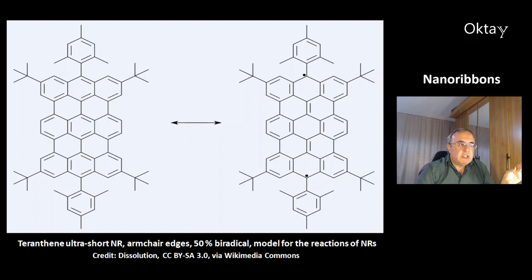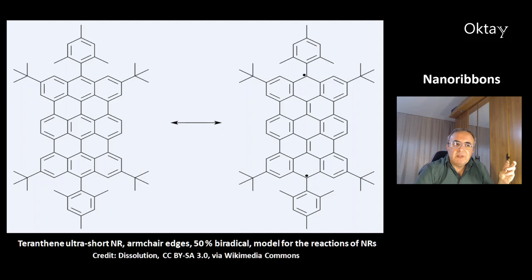This is an interesting molecule called Terracene — an ultra-short nanoribbon. You can see it has armchair edges. The formula shows it has 50% biradical structure. This compound is interesting because it is a model for nanoribbons, allowing you to study reactions of nanoribbons with this compound.